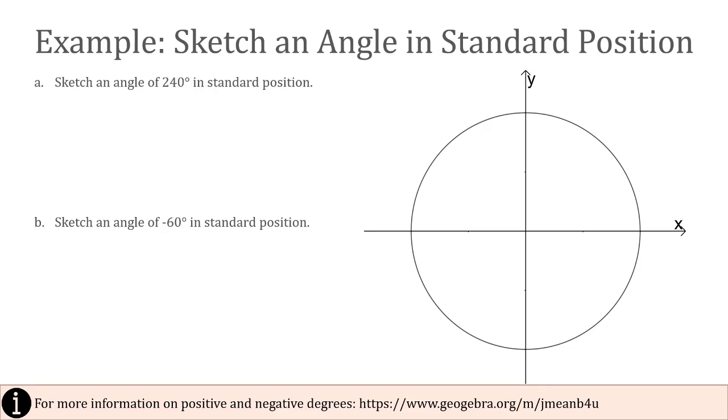Now let's look at an example. Sketch an angle of 240 degrees in standard position. So 240 degrees in standard position. The standard position part tells me that I need to be starting with my initial side on the positive x-axis. So there we go. And the fact that it's a positive 240 degrees tells me that that initial side is going to open up and it's going to go counterclockwise.